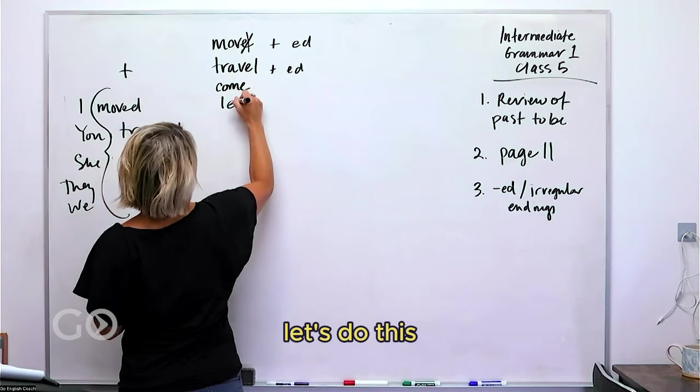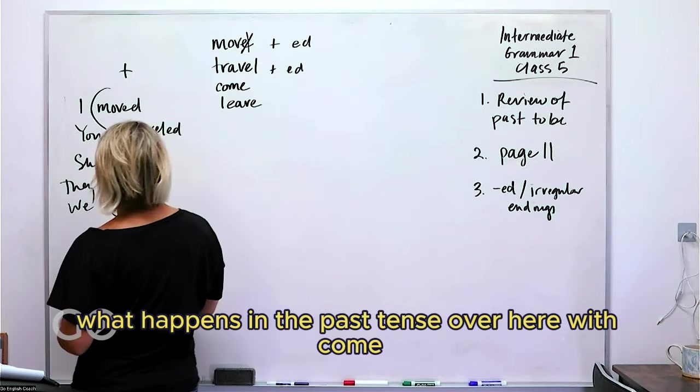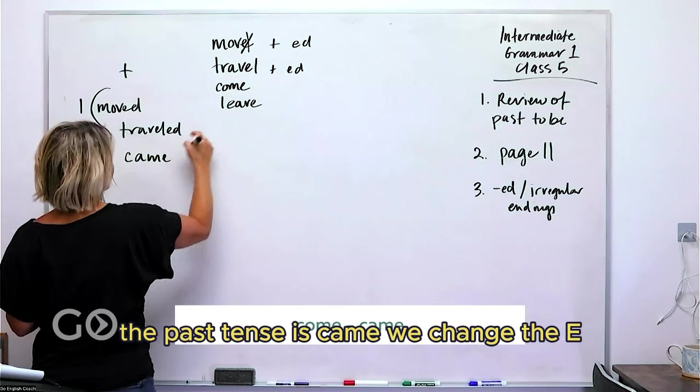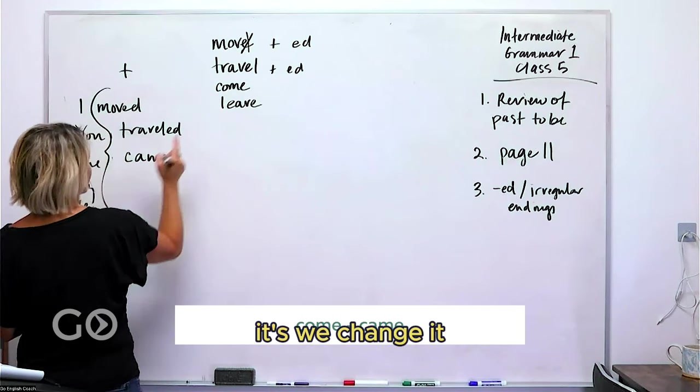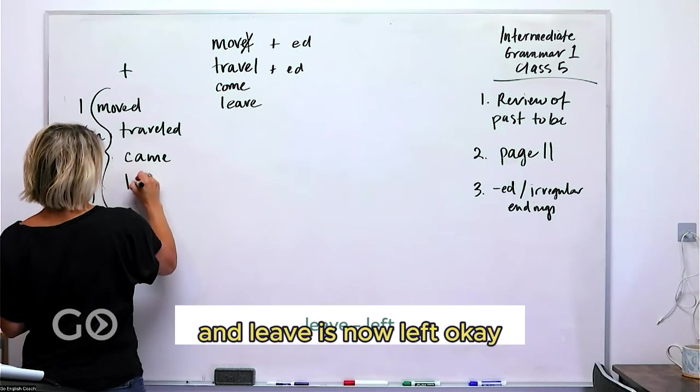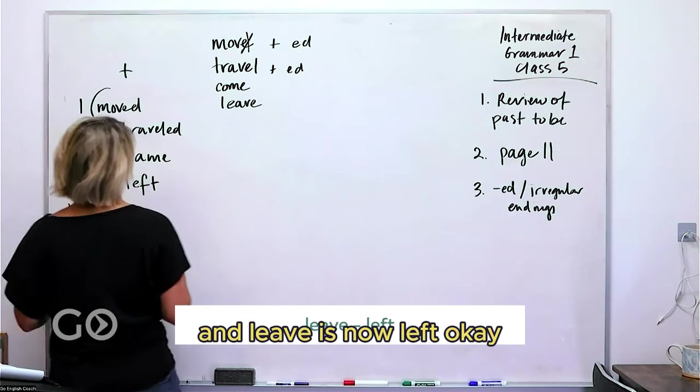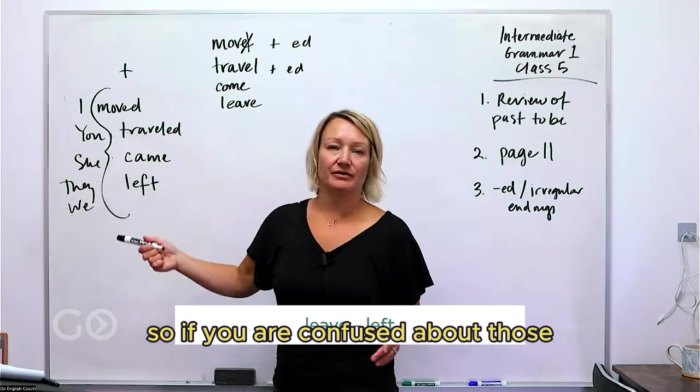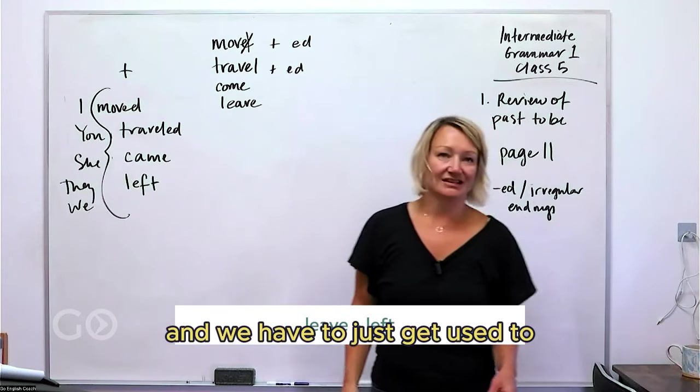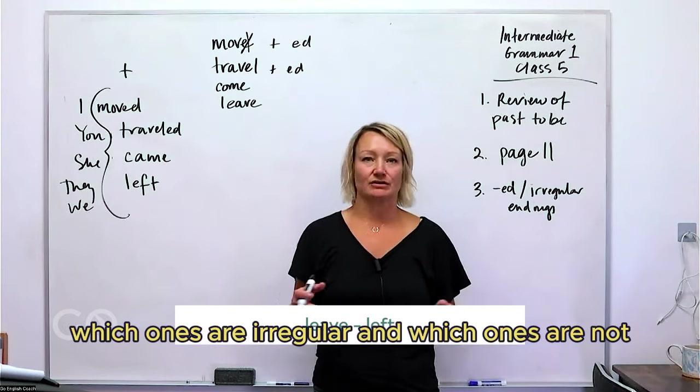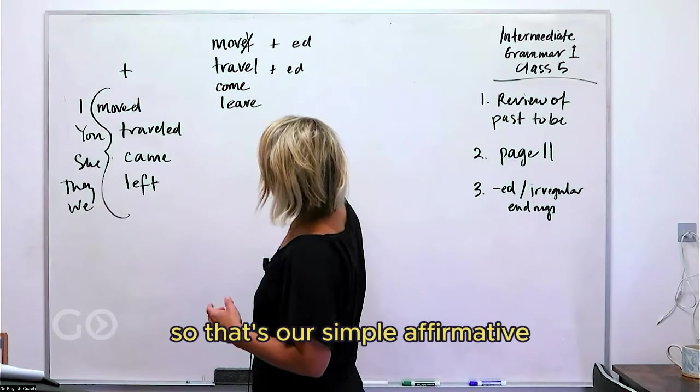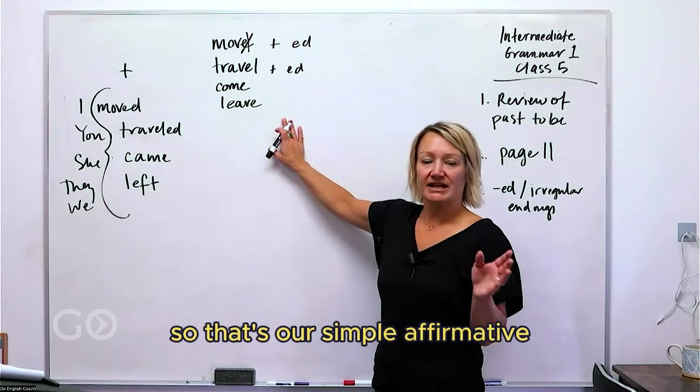Then we've got a couple irregulars. Let's do this. What happens in the past tense over here with come? The past tense is came—we change the e, no ed, we change it. And leave is now left. So if you are confused about those, that's just because it's an irregular form and we have to just get used to which ones are irregular and which ones are not. There's a lot of them.